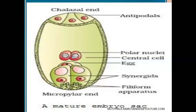At the micropylar region, mainly three cells are present as the egg apparatus. In the majority of embryo sacs, the egg apparatus consists of three cells. In Plumbago, only a single egg cell is present and synergids are absent. In Peperomia, there is a single egg cell with a single synergid. If synergids are absent, the egg cell itself contains filiform apparatus. The main function of the filiform apparatus is attracting or receiving the pollen tube during fertilization.